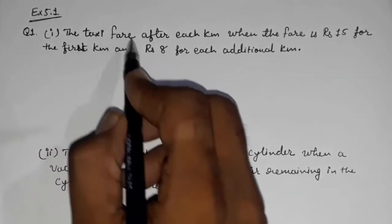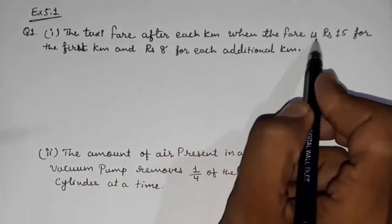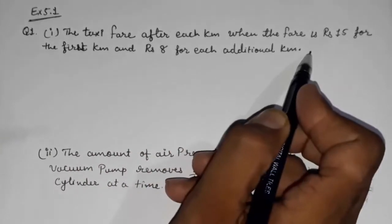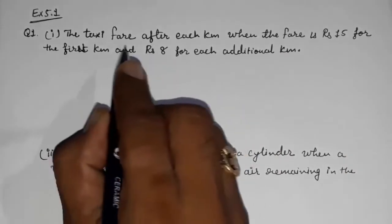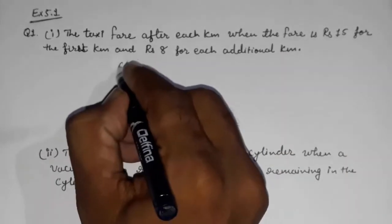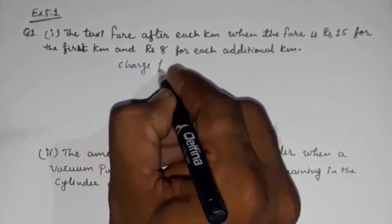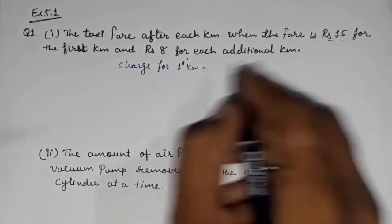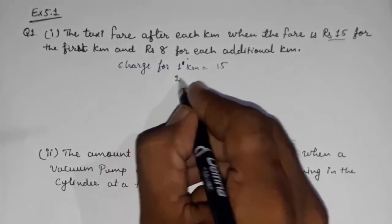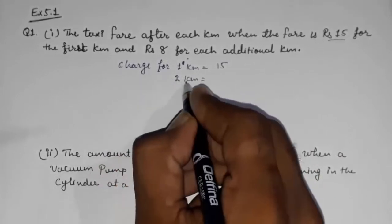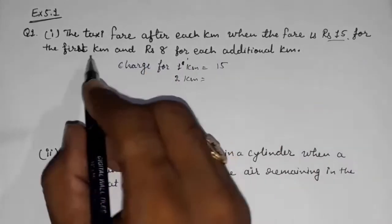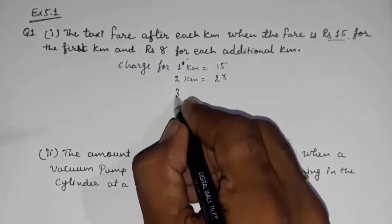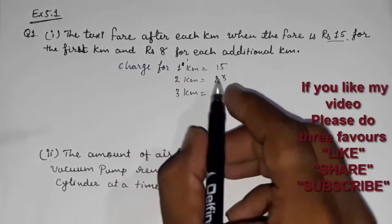First: the taxi fare after each kilometer, when the fare is rupees 15 for the first kilometer and rupees 8 for each additional kilometer. So first we have to find the charge for one kilometer — it is rupees 15. Charge for two kilometers will be 15 plus 8, which is 23.